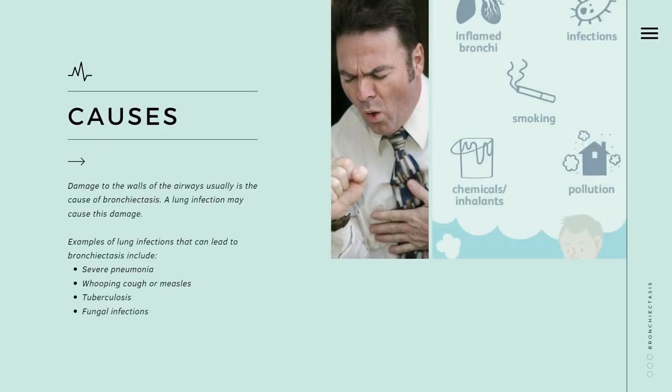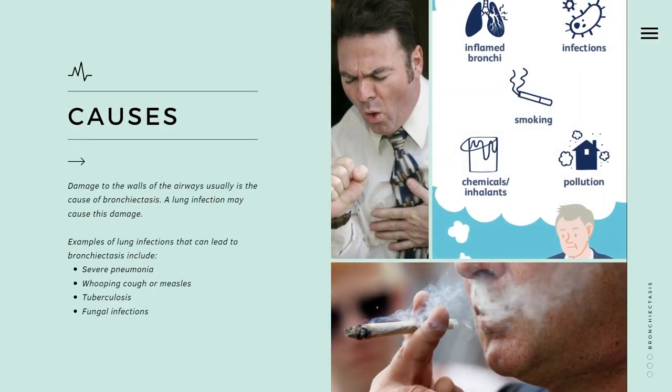What are the causes? Damage to the walls of the airway is usually the cause of bronchiectasis. A lung infection may cause this damage. Examples of lung infections that can lead to bronchiectasis include severe pneumonia, whooping cough or measles, tuberculosis, and fungal infections.